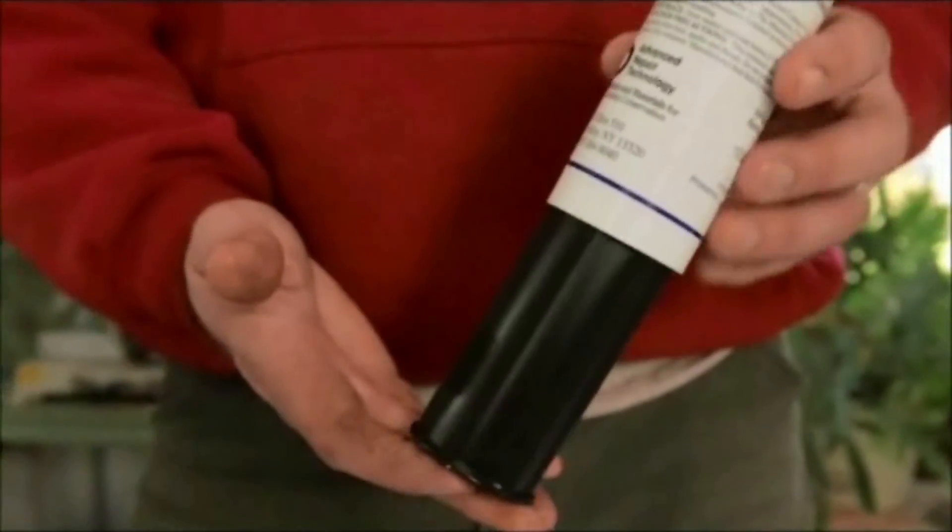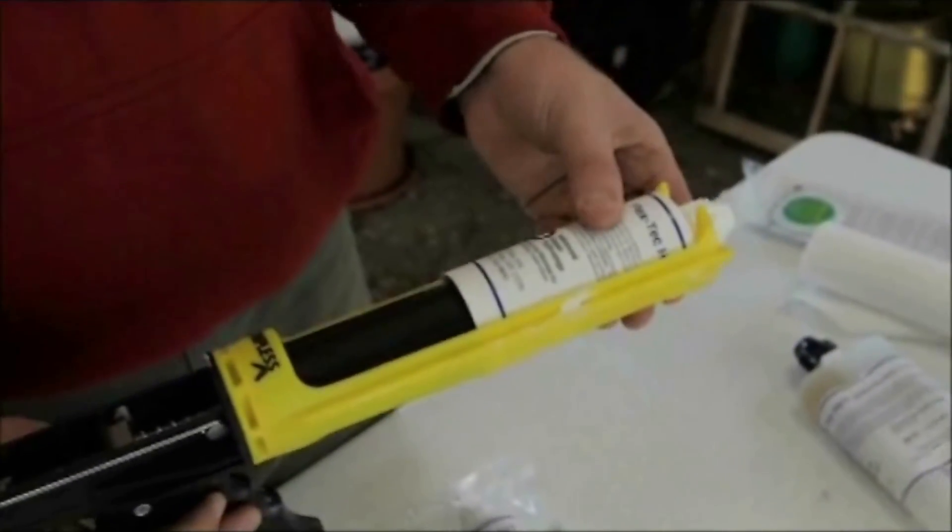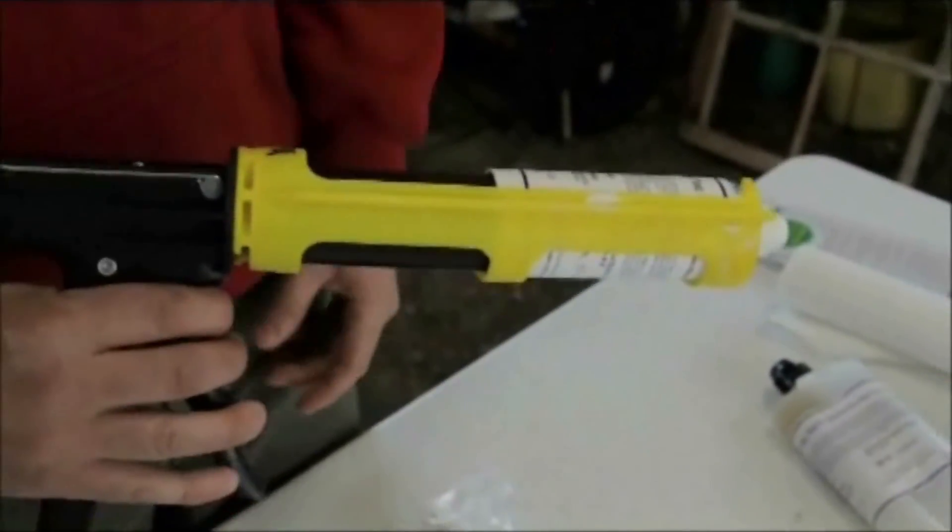Mounted into the standard caulking gun, the two-part FlexTech can be dispensed and mixed for your at-home repairs. Once again, an even color is desired from the mix.